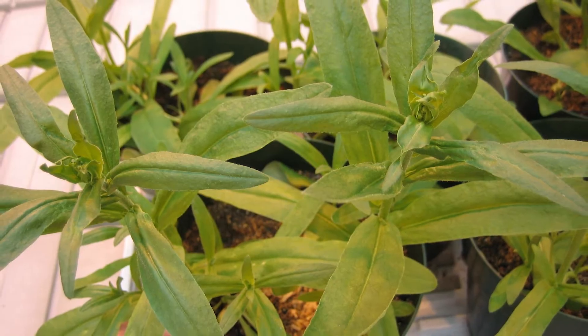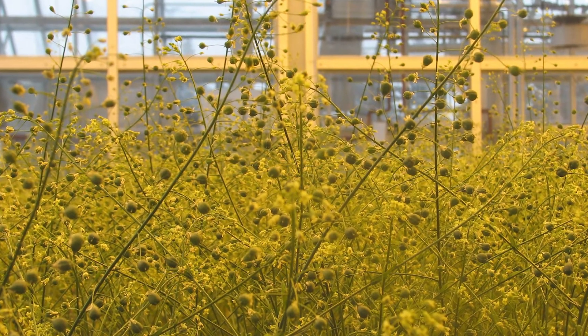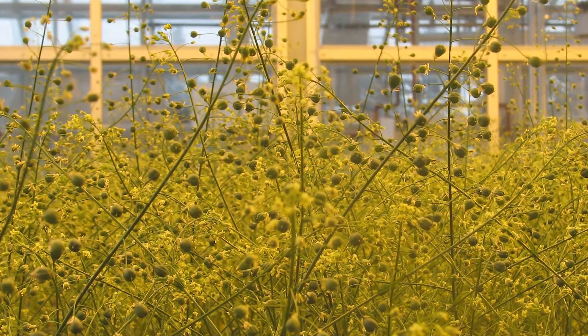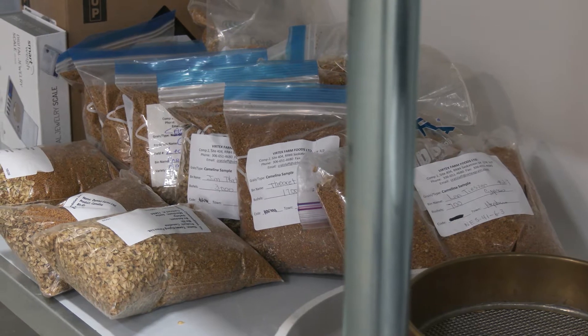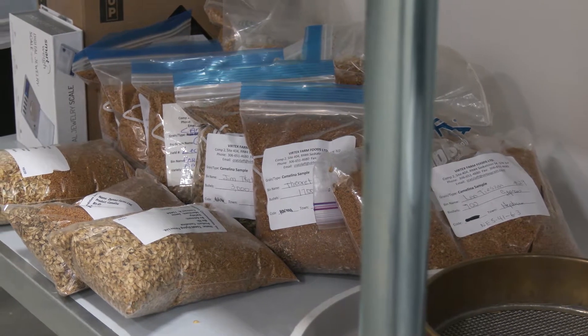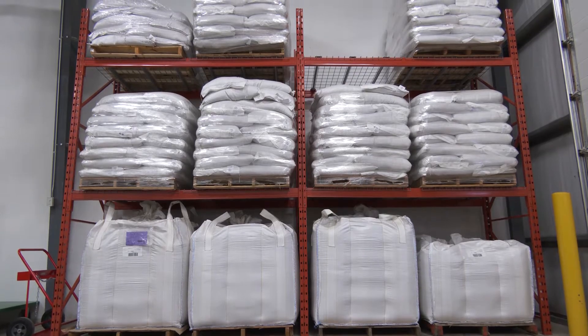Camelina is an ancient oilseed and has been part of civilization for thousands of years. Only recently have modern breeding techniques been applied to improve the agronomic characteristics of this crop.